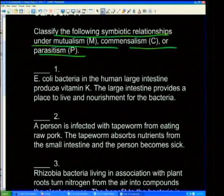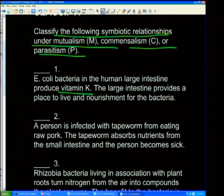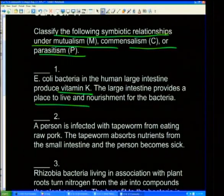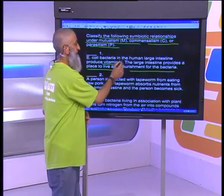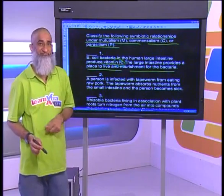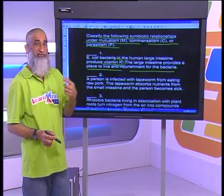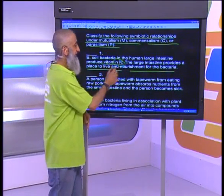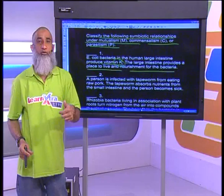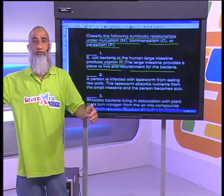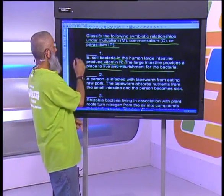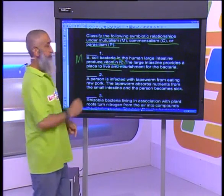Equally: bacteria in the human large intestine produce vitamin K, and the large intestine provides a place to live and nourishment for the bacteria. What do the E. coli do? They produce vitamin K for the human. What does the human do? It provides shelter and nourishment for the bacteria. Win-win — both benefit. So: mutualism.